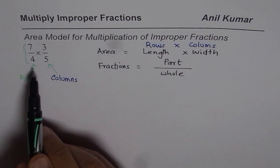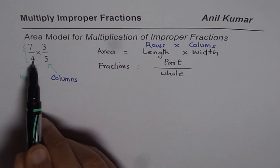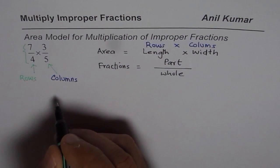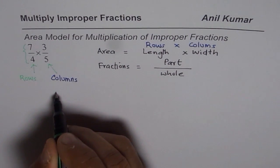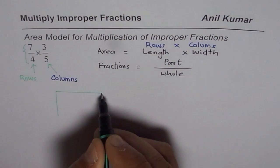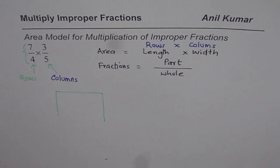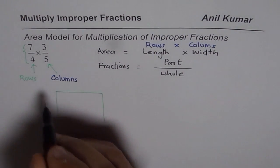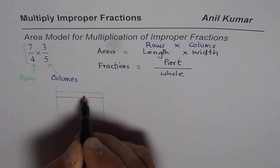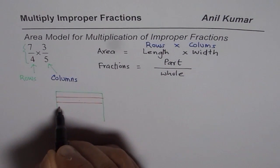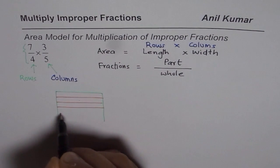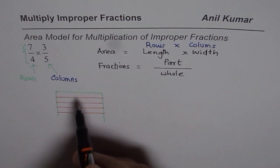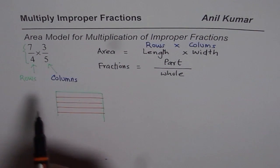Now it is important to understand that in fractions, a rectangle can be divided into 4 rows and 5 columns to represent this kind of a fraction. So I will make a rectangle. This is my rectangle. Now this rectangle, I will divide into 4 equal parts. So this is 1, 2, 3 and 4.